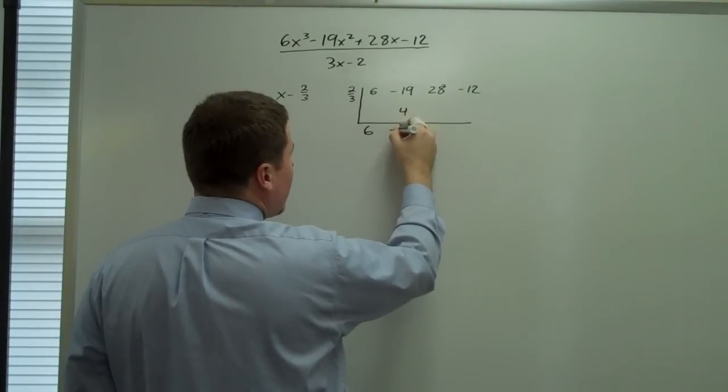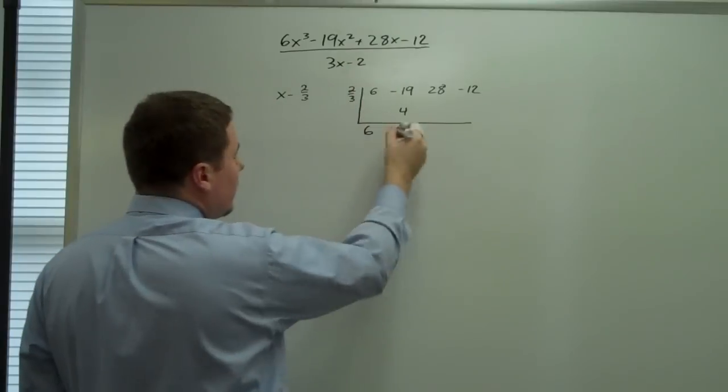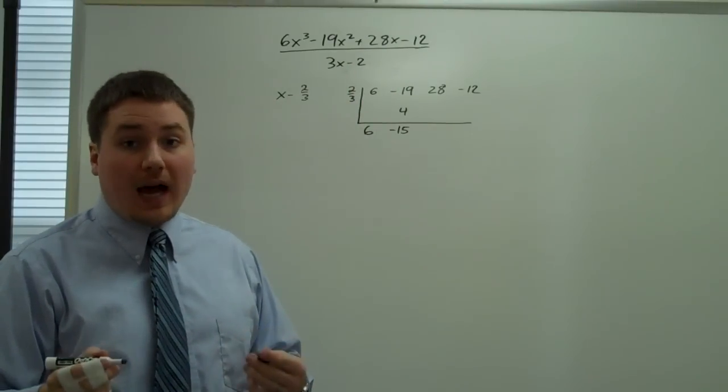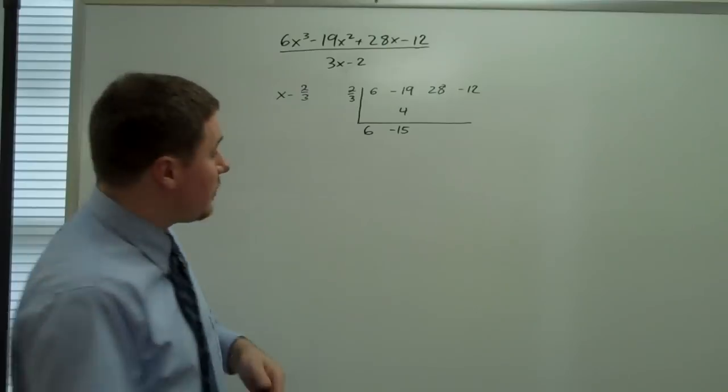Negative 19 and 4 would be negative 15. Now 2 thirds of negative 15. So 1 third of 15 would be 5. 2 of those would be 10. So negative 10.